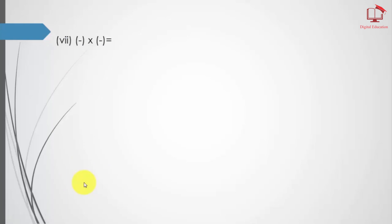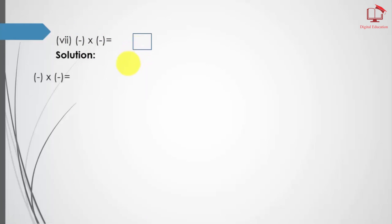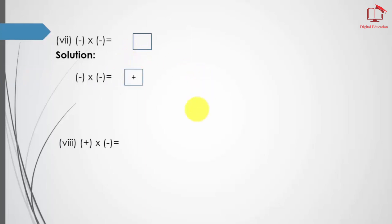Part number 7: you can see here we have two negative signs and we have to fill the box with the right sign. The right answer is minus times minus equals plus. Similarly, if the first one is positive and the second is negative, the right answer is plus times minus equals minus.